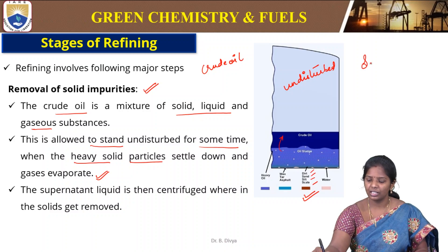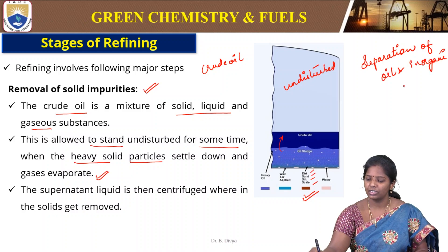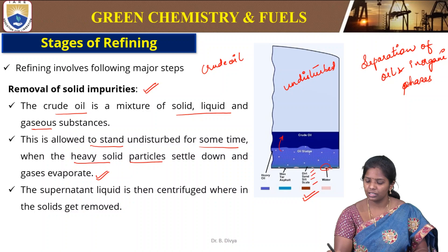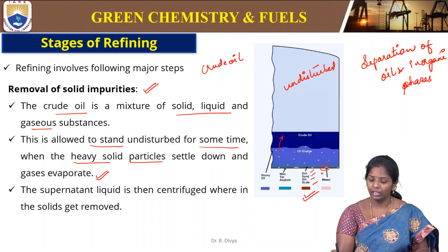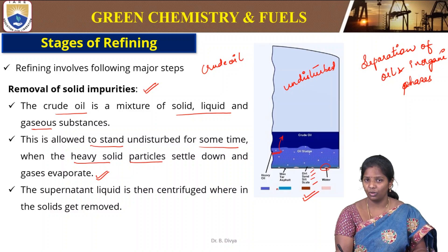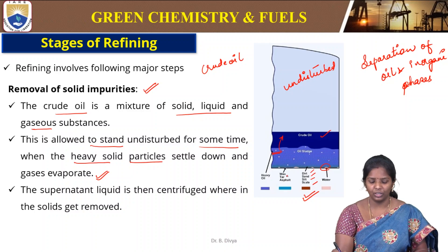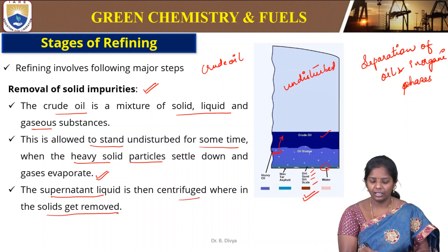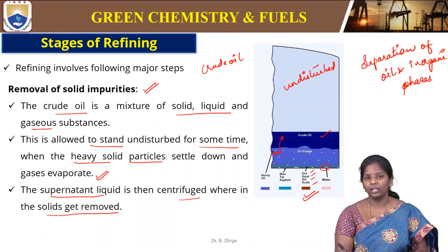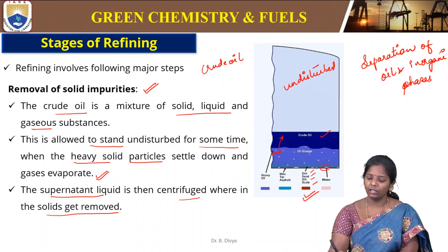Separation of phases takes place — separation of the organic oil phase and the inorganic phase. Water also accumulates with the dirt, and waxy layers or heavy oils remain below, while the lighter crude oil rises to the top. This supernatant liquid is then centrifuged, wherein the solids are removed. After centrifugation, even very small particles settle down so that they can be removed.